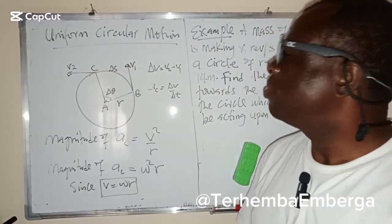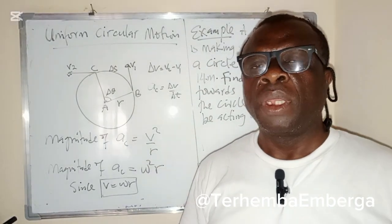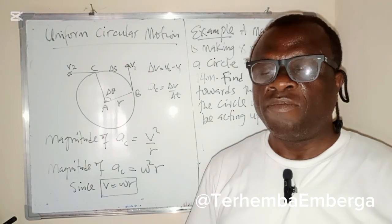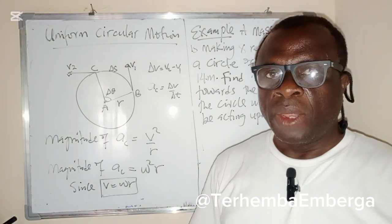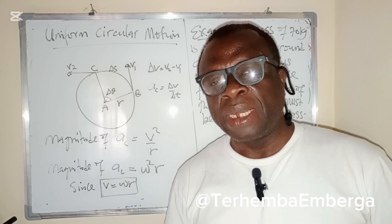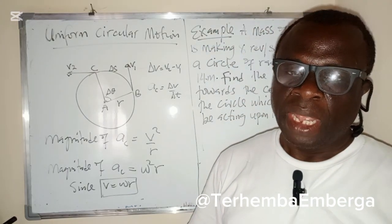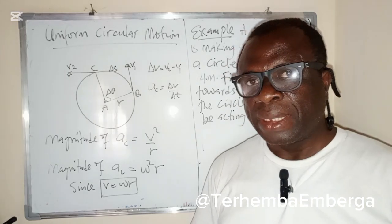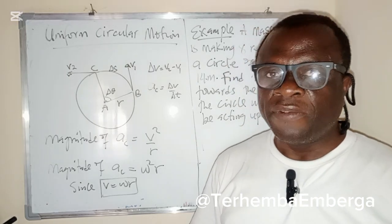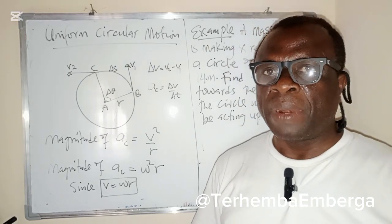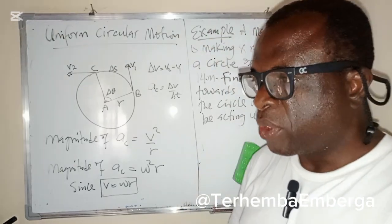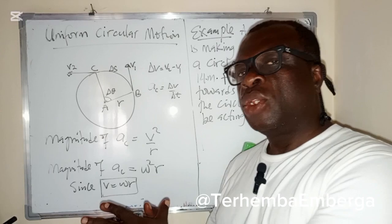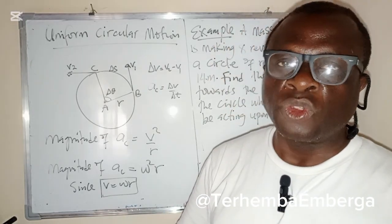Today we'll be looking at uniform circular motion. We know that circular motion is a type of motion. In one of our classes, we treated motion as a topic, and we said that motion can take place if and only if a force is applied — it means the change in position of an object or particle from one point to another when a force is applied.